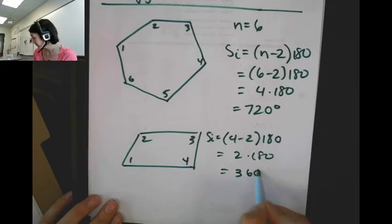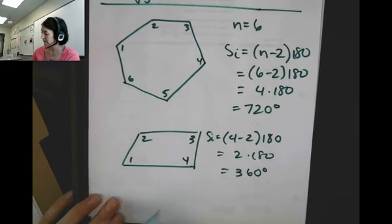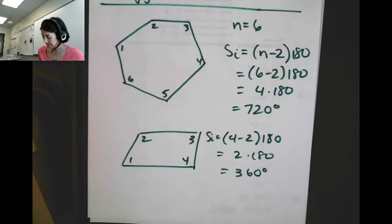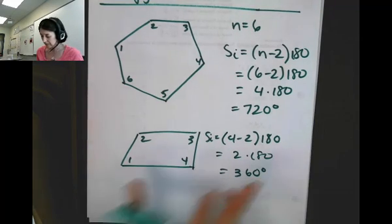You already knew that, but the book connects it to the fact that a quadrilateral is a polygon, but it's kind of a special polygon.